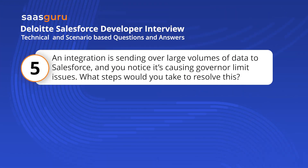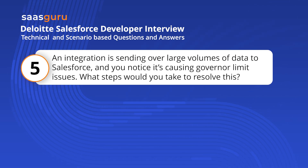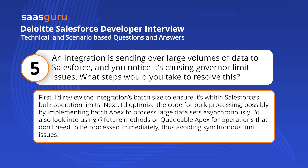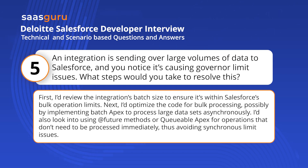I would also incorporate bulk trigger best practices to handle multiple records efficiently. An integration is sending large volumes of data to Salesforce and causing governor limit issues. First, I'd review the integration's batch size to ensure it's within Salesforce's bulk operation limits. Next, I'd optimize the code for bulk processing, possibly by implementing batch APEX to process large datasets asynchronously. I'd also look into using future methods or queueable APEX for operations that don't need to be processed immediately, avoiding synchronous limit issues.